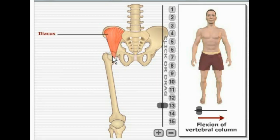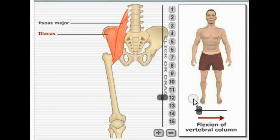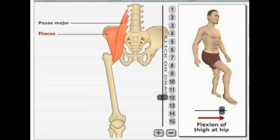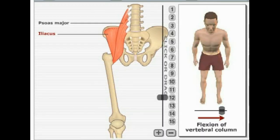Here we're looking at the iliacus muscle of the hip. The origin is the iliac fossa, and the insertion is the lesser trochanter of the femur. This muscle works hand in hand with the psoas major. Psoas major originates on the bodies and transverse processes of lumbar vertebrae 1 through 5, and also inserts on the lesser trochanter of the femur. Together these muscles are called the iliopsoas, and they both perform flexion of the thigh and flexion of the vertebral column and pelvis.